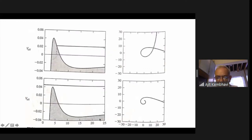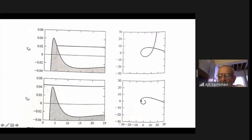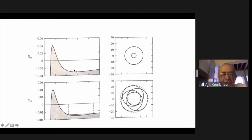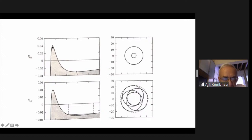A particle sitting at the minimum of the potential gives a circular orbit, as in Newtonian theory. You can also sit at the maximum of the potential and get a circular orbit, but this orbit is unstable — if you perturb it slightly, either you go to infinity or you fall into the black hole. In Newtonian theory, a particle with negative energy orbits in an ellipse. When you come to Einstein's theory, because of the extra 1 over r cubed term, you get nearly an ellipse, but the ellipse is not closed — as the particle goes round, the ellipse is rotated slightly. This is known as the precession of the perihelion.